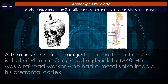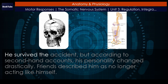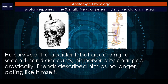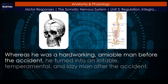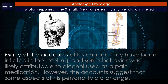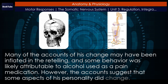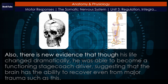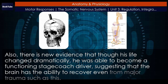A famous case of damage to the prefrontal cortex is that of Phineas Gage. Dating back to 1848, he was a railroad worker who had a metal spike impale his prefrontal cortex. He survived the accident, but according to second-hand accounts, his personality changed drastically. Friends described him as no longer acting like himself. Whereas he was a hard-working, amiable man before the accident, he turned into an irritable, temperamental, and lazy man after the accident. Many of the accounts of his change may have been inflated in the retelling, and some behavior was likely attributable to alcohol used as a pain medication. However, the accounts suggest that some aspects of his personality did change. Also, there is new evidence that though his life changed dramatically, he was able to become a functioning stagecoach driver, suggesting that the brain has the ability to recover even from major trauma such as this.